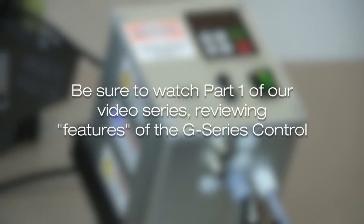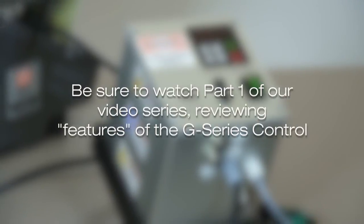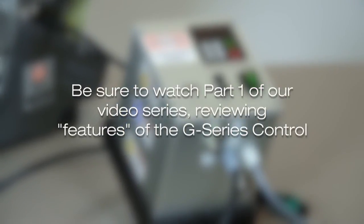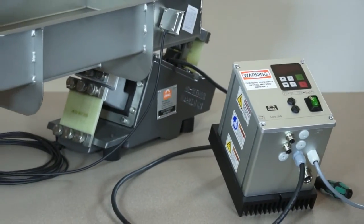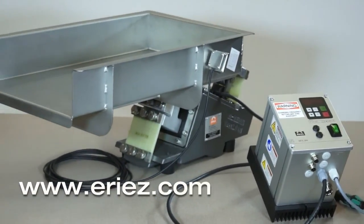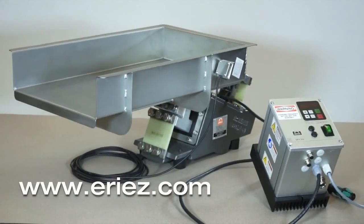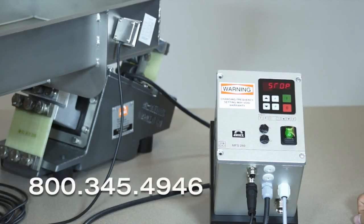We hope this control setup video was helpful. Don't forget, if you'd like to learn more about the G-Series control, be sure to watch our G-Series control part 1 features video. If you'd like to learn more about Erie's vibratory equipment, visit our website at www.eries.com or give us a call at 800-345-4946.